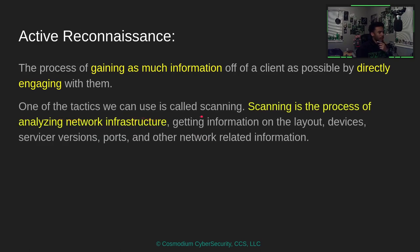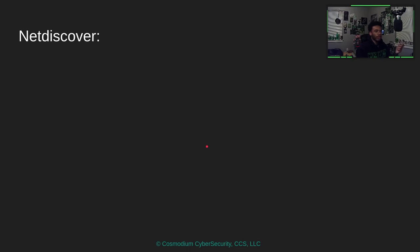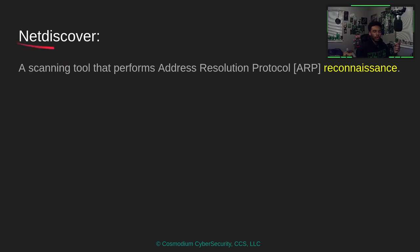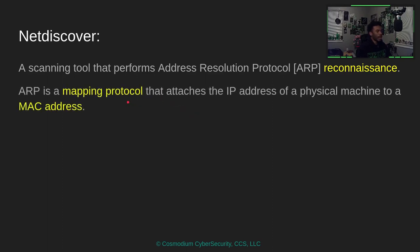One of the tactics we can use is called scanning. Scanning is the process of basically analyzing network infrastructure — we're getting information on the layout, the devices, different versions on ports that are on the network, and basically all that network-oriented information. A tool we can use to do some basic scanning is a tool called NetDiscover. NetDiscover basically uses ARP to scan a network. ARP is a mapping protocol that basically attaches the IP address of a machine to its MAC address.